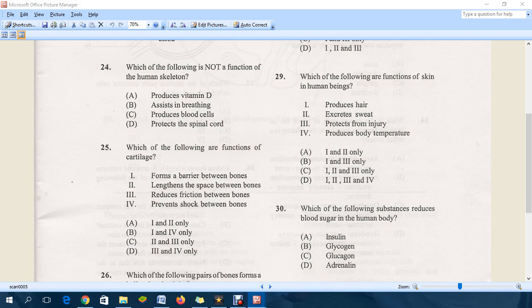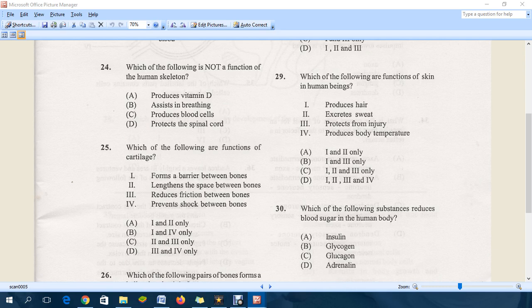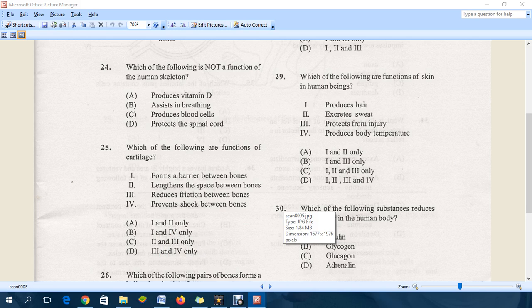Moving on to question 25: which of the following are functions of cartilage? We have a combination here. Forms a barrier between bones, lengthens the space between bones, reduces friction between bones, and prevents shock between bones. As for prevent shock between bones, that must be part of your answer, and reduce friction between bones - those two. These are two possible answers, so that seems to be D, which is the correct answer.